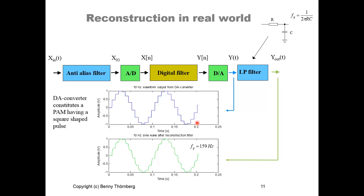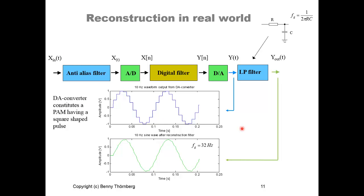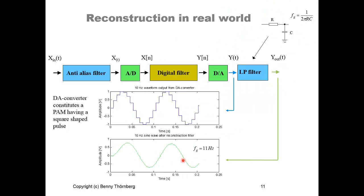Lowering the cutoff frequency to 32 Hz, there is almost no staircase variation visible due to the pulse amplitude modulation, though some small variations remain — it is not a perfect sine wave. Lowering further to 11 Hz, just 1 Hz above the signal frequency, the output looks very smooth and very close to a sine wave, even though there are still steps at the D-to-A converter output.